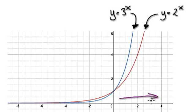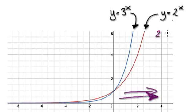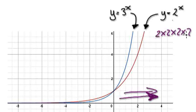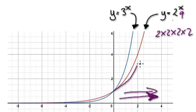As you go towards positive infinity, as you make x bigger and bigger, what you're doing is 2 times 2 times 2 times 2. Each time you increase the power it gets bigger and bigger. That's why this graph gets bigger and bigger.